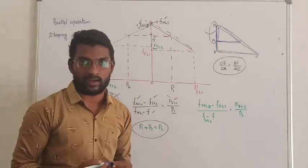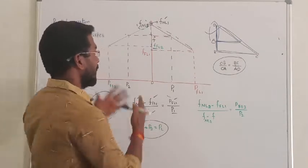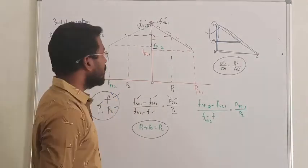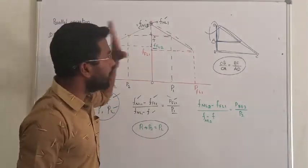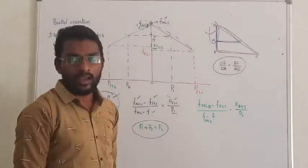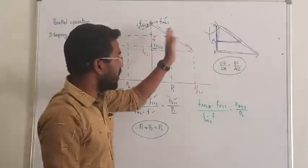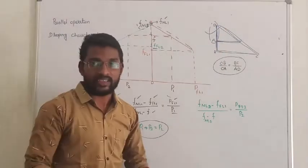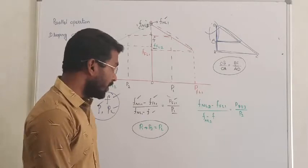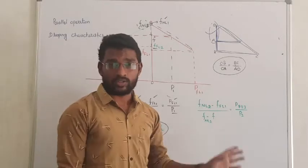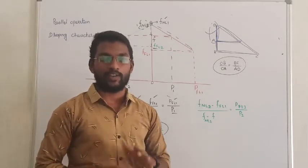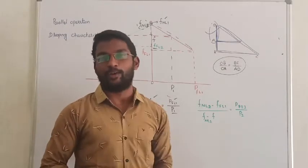That is how we obtain frequency and power sharing from the drooping characteristics of parallel alternators. I hope you all understand. You don't need to memorize anything — just apply the logic of similar triangles to solve the example directly. Ask in the comment section. Thanks for watching.